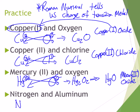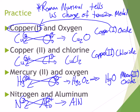Nitrogen is 3−, aluminum is 3+. Again, the 3− and 3+ cancel, so we reduce down. Make sure the metal goes first as the cation. Our formula is AlN, and the name is aluminum nitride.